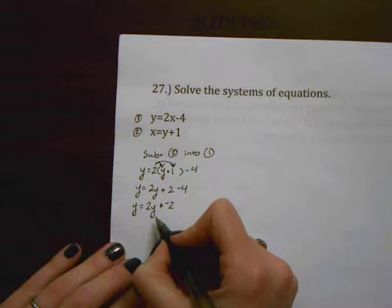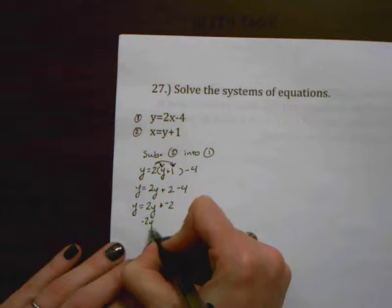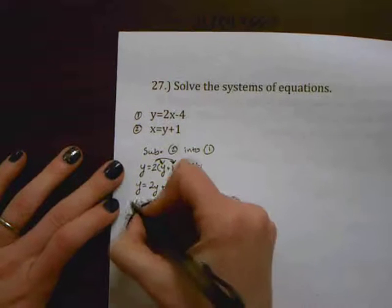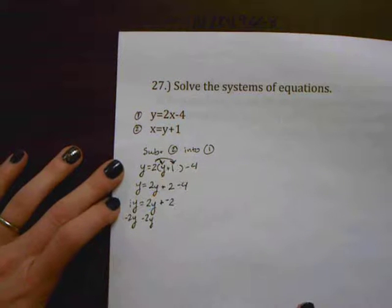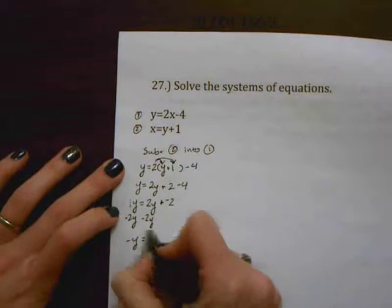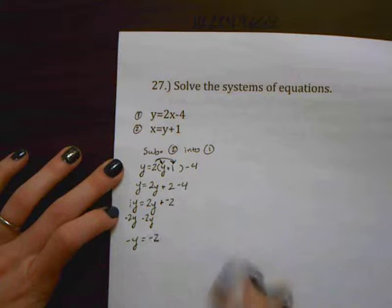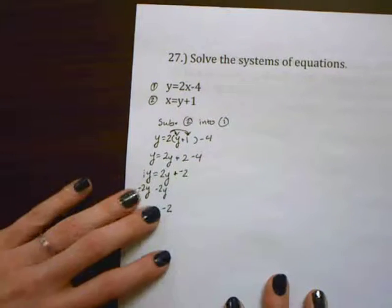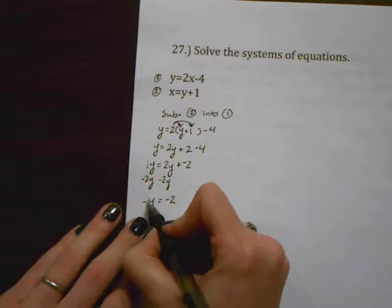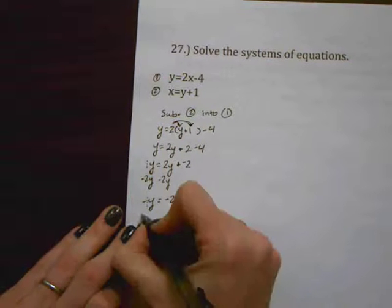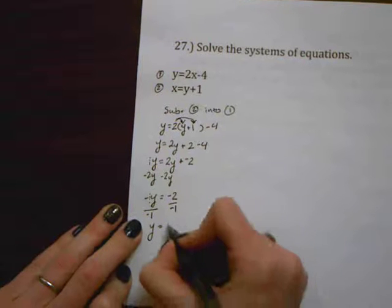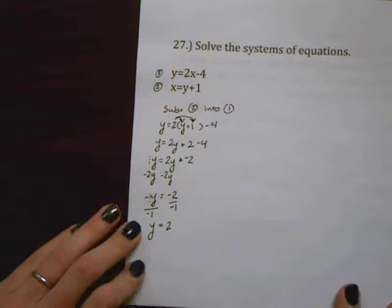And now I can get all my variables on one side. So I'm going to subtract 2y from each side because I've already got a y over here. Remember that there's an understood 1 there and 1 minus 2 gives me negative y. Over here I'm left with negative 2. And then the last thing I need to do to figure out what y is. It's almost by itself but I've got this negative 1 there so I need to divide by negative 1 on both sides which leaves me with y equals 2.